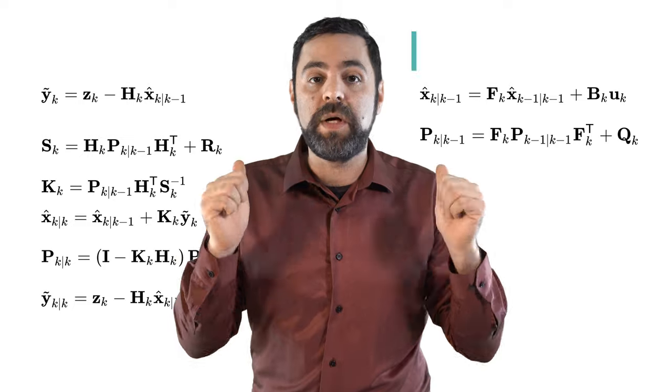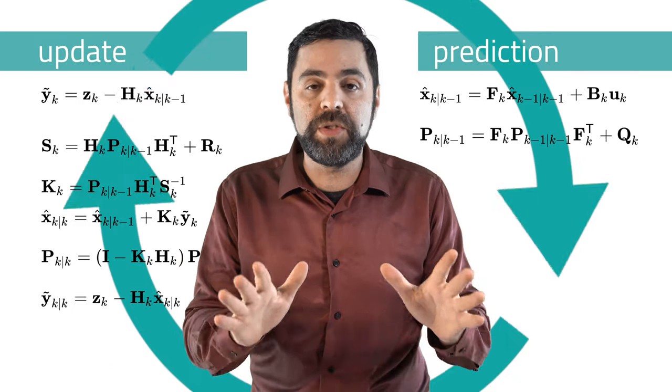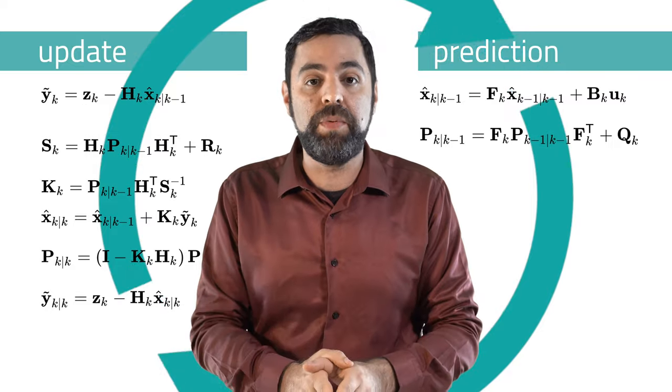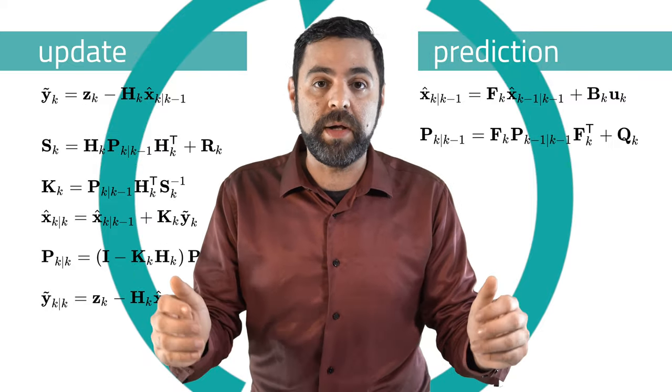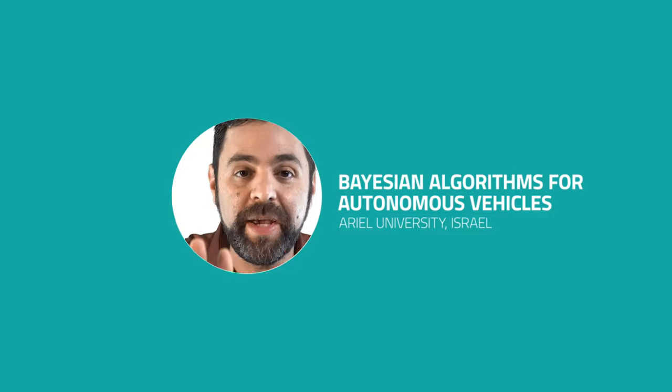This section is called the Kalman Filter Part 1, and basically the Kalman Filter is quite simple. These are the Kalman Filter equations and all you need to do is to apply them in the next self-driving car project that you are building. Good luck! No, no, no, I'm kidding.